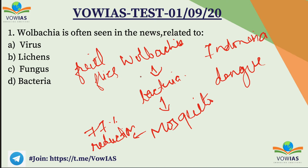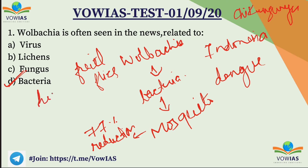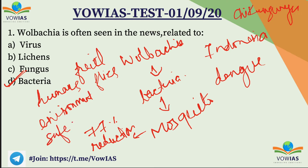It is passed on through progeny. When it was introduced in mosquitoes, the dengue virus was not able to spread via the Aedes aegypti mosquito. We also know that Aedes aegypti is responsible for chikungunya, Zika virus, and yellow fever. The answer is D — bacteria — and this is safe for humans and the environment.